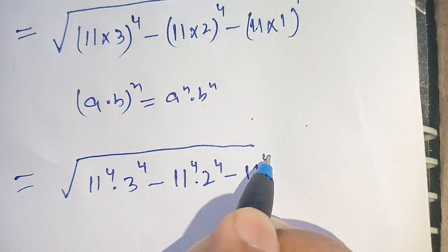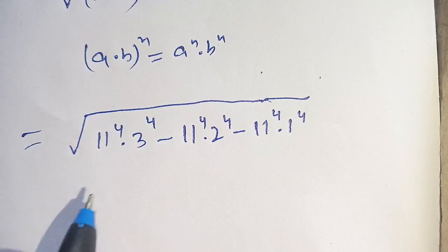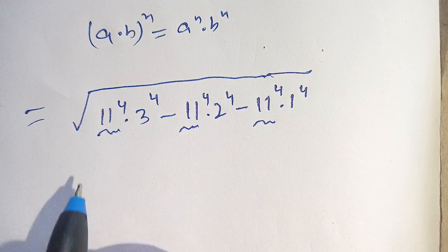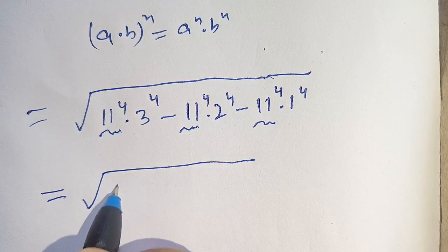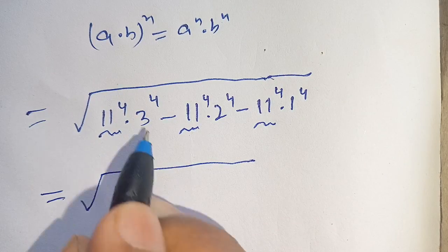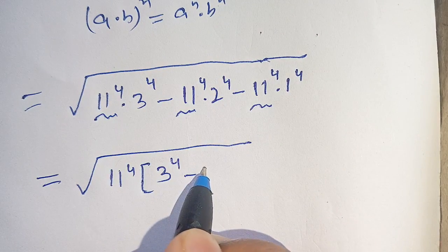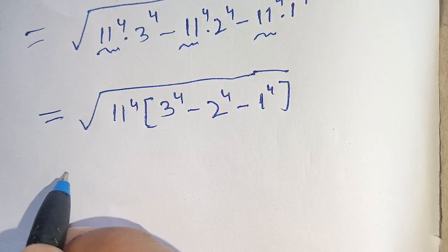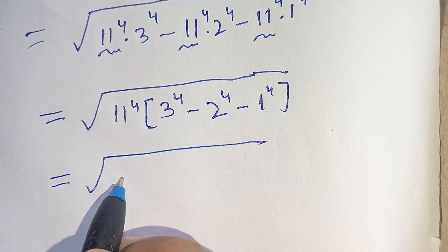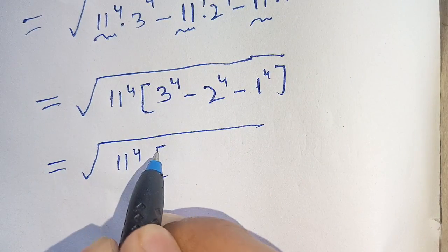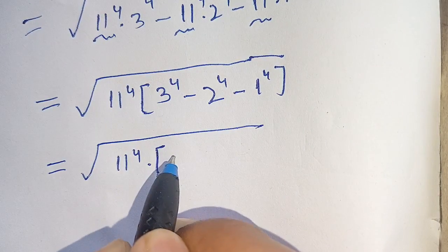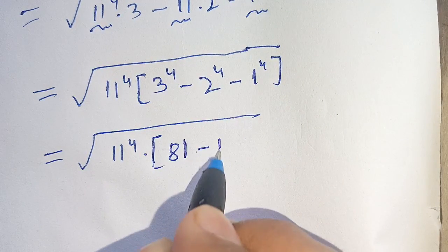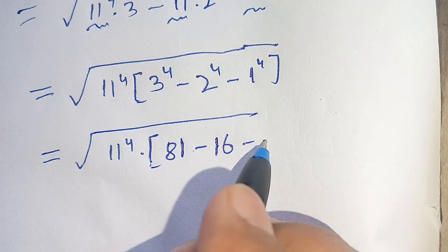From all three terms we take 11 power 4 out as a common factor, giving us square root of 11⁴ times (3⁴ minus 2⁴ minus 1⁴). Now 3⁴ equals 81, 2⁴ equals 16, and 1⁴ equals 1.